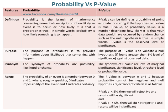Whereas, the p-value is also between 0 and 1, because probability cannot be negative, and the null hypothesis reject or accept criteria is as follows: if the p-value is less than 5%, we reject H₀ and results will be significant; if the p-value is greater than 5%, we do not reject H₀ and results will be insignificant.